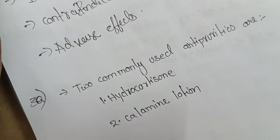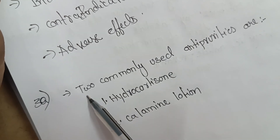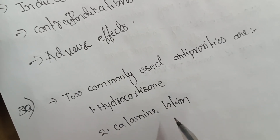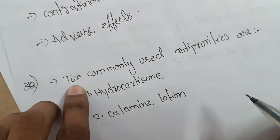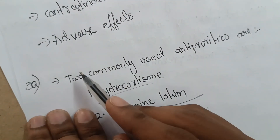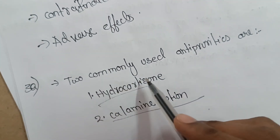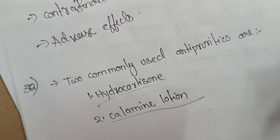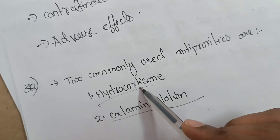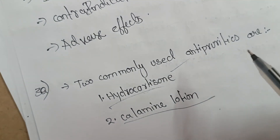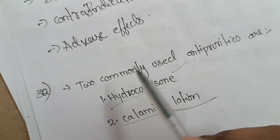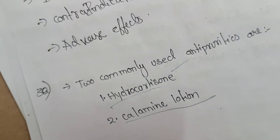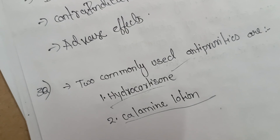For example, for antipyretics, I wrote: 'Two commonly used antipyretics are hydrocortisone and calamine lotion.' By writing this sentence — even if it's wrong — the examiner gets the idea that you know something about the topic. Even with a spelling mistake, they won't care; they may give two marks. So try to add matter to your answer so that you will get good marks in your exam.